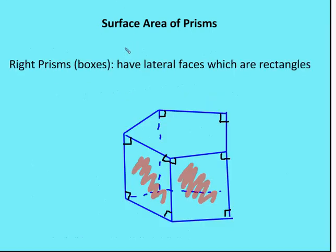In terms of references, a lot of times we're going to talk about right prisms. All that means is that the lateral faces of the prism are rectangles. You can see here a pentagonal prism where all the faces going around it are rectangles. The book also calls those right prisms 'boxes.'